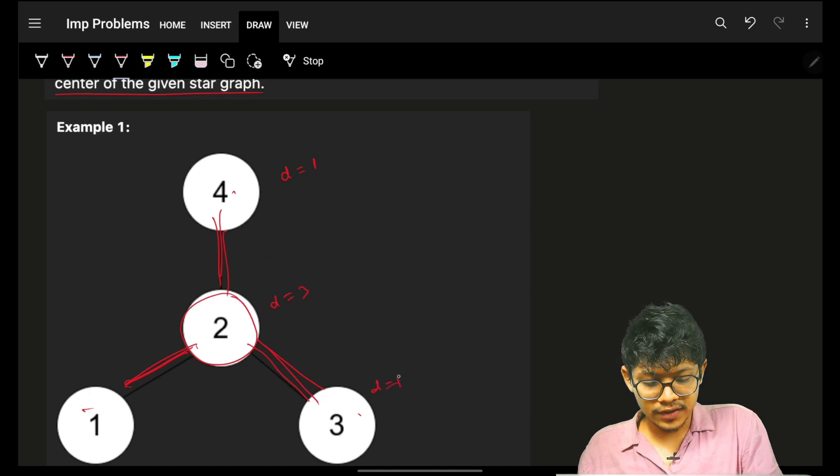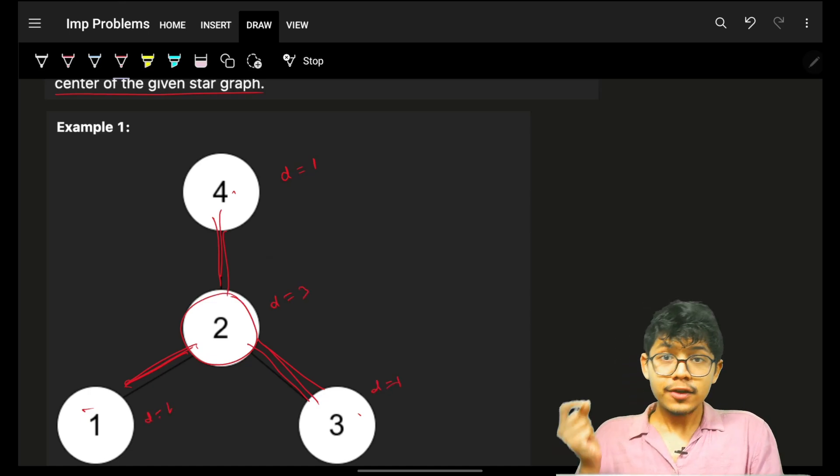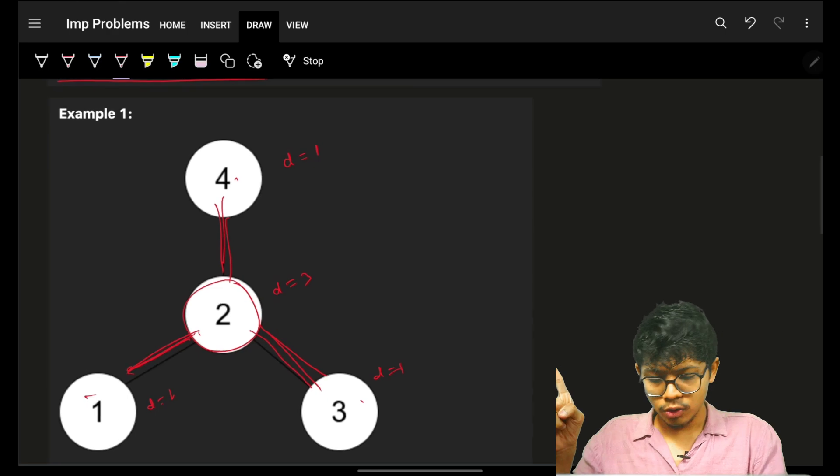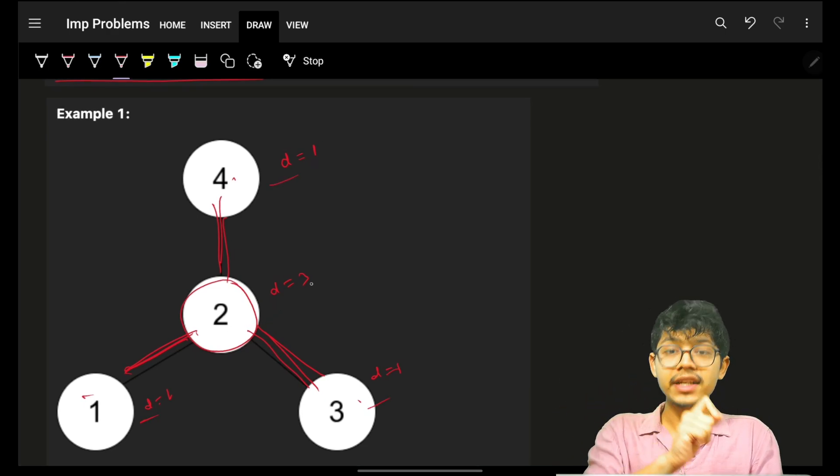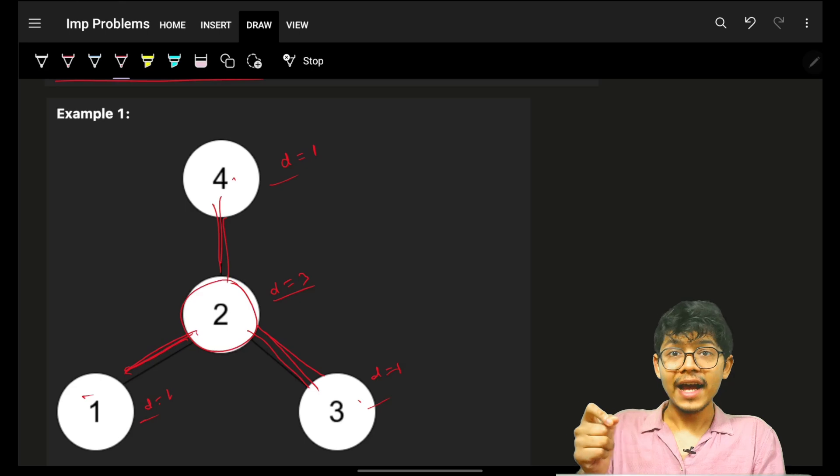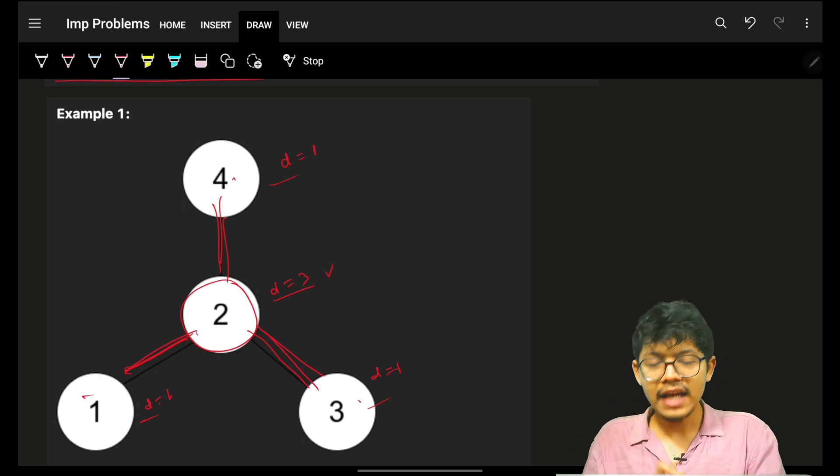I will maintain the degree of every node. The degree of this is one, degree of this is three, degree of this is one, degree of this is one. So for all the other nodes, the degree will be one, but for the center node, degree will be n minus 1, and whoever has a degree of n minus 1, that will be my center node.